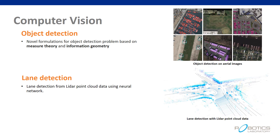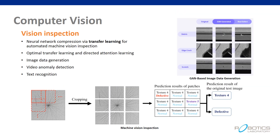Research on computer vision is being done actively, especially on object detection and vision inspection. We propose novel formulations for object detection problems based on measure theory and information geometry, which shows notable performance on object detection in 2D and 3D environments and traffic lane detection. Lane detection using 3D point cloud data is also being actively studied. In vision inspection, we propose transfer learning based neural network compression for automated machine vision inspection. We also study image data generation from insufficient datasets, and anomaly detection by unsupervised learning from video datasets.